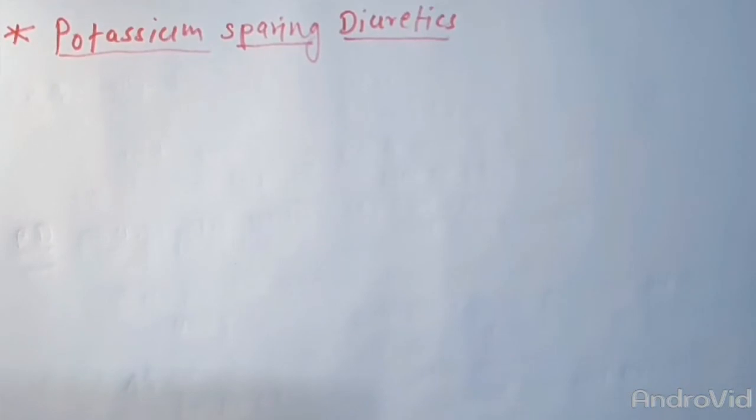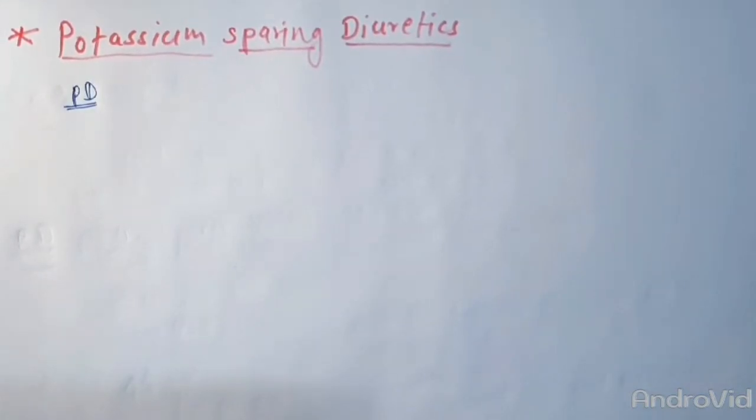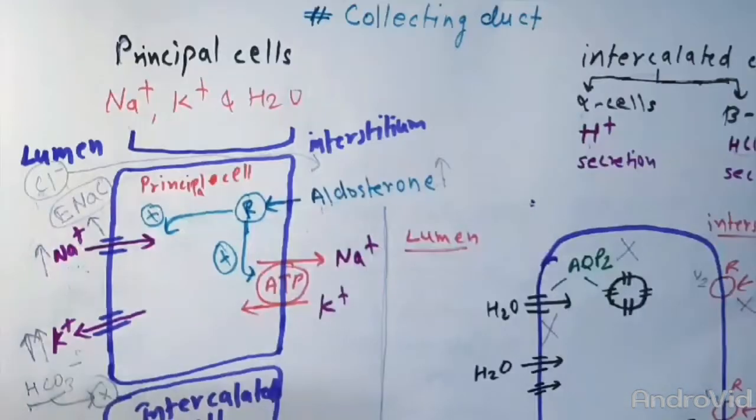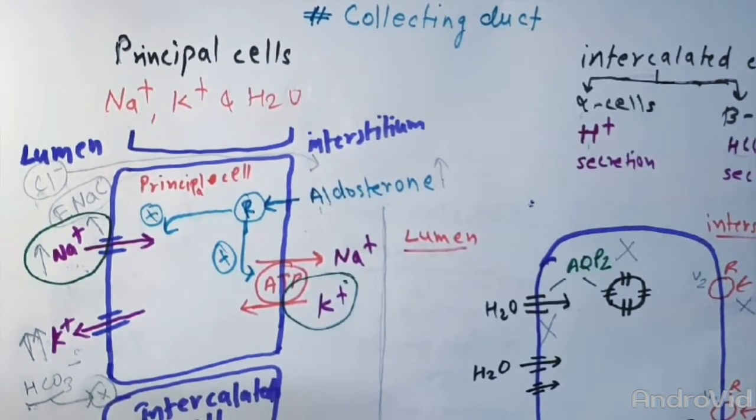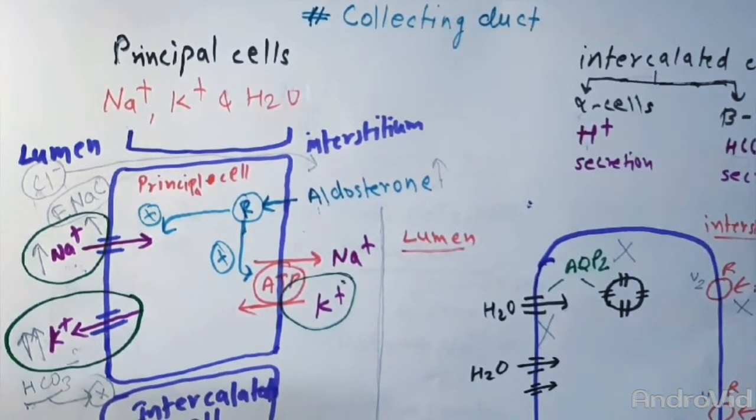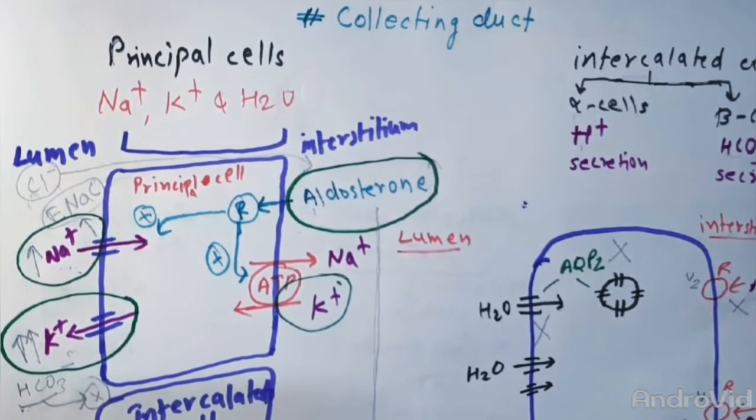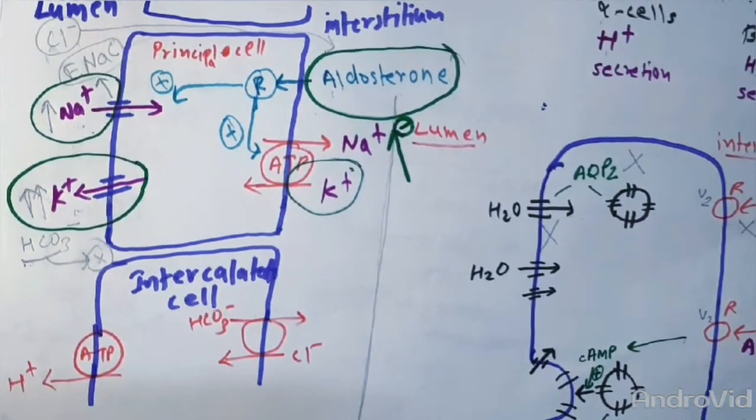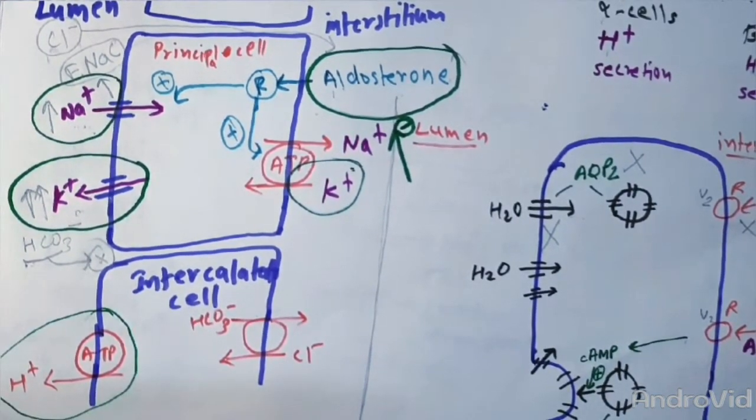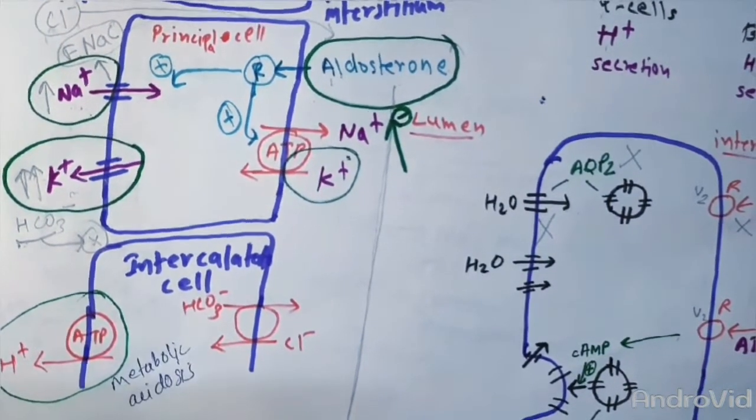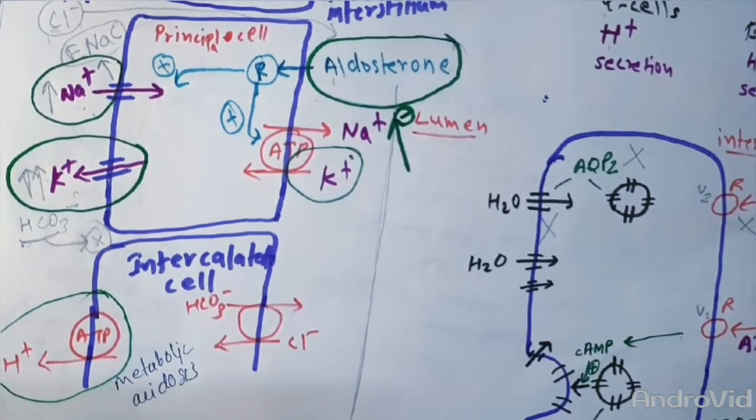So now let's talk about potassium sparing diuretics. Talking about their pharmacodynamics, they reduce the sodium absorption in the collecting tubules. As we have discussed earlier in collecting tubules, sodium potassium absorption and potassium secretion are regulated by aldosterone. Now the aldosterone antagonists interfere with this process. Similar effects are observed with respect to hydrogen handling by the intercalated cells, which explains the metabolic acidosis seen with aldosterone antagonists.